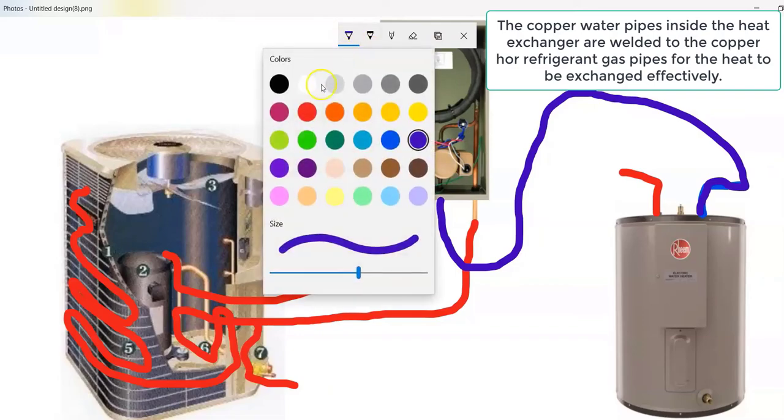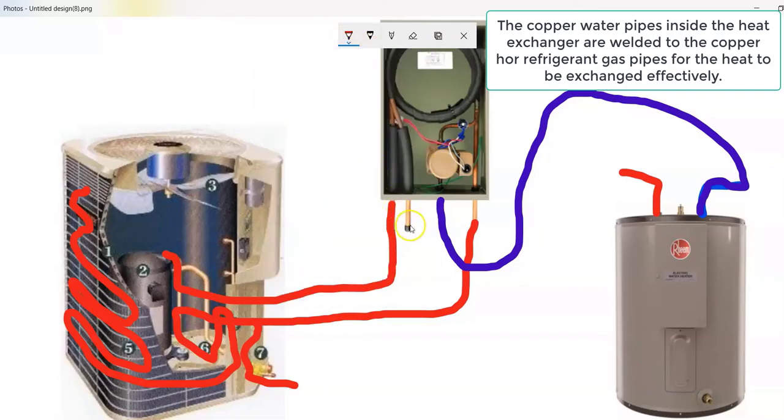And they're basically going to run through this coil and when it's all said and done the water is going to come out of the heat exchanger and it's going to be plumbed into your water heater tank through the bottom.